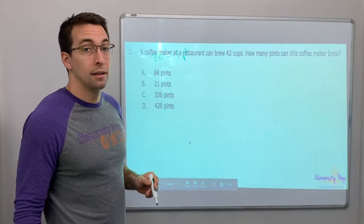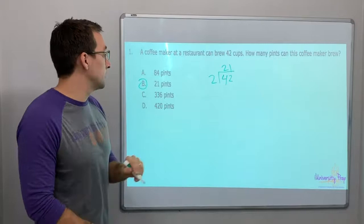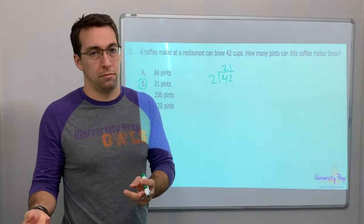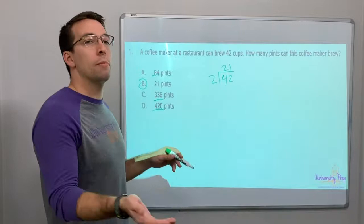So 42 cups, how many pints? 42 divided by 2. 21. 21 pints. Here's the thing that you really could have known or should have known before you looked at this. A cup is smaller than a pint. So there's going to be fewer pints than cups. You see how big these numbers are? They're huge. So 21 is the only one number that's smaller. That would have helped.